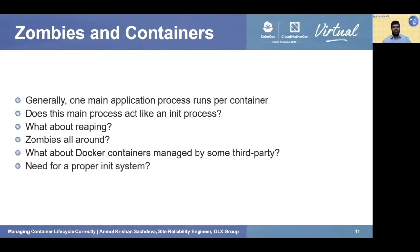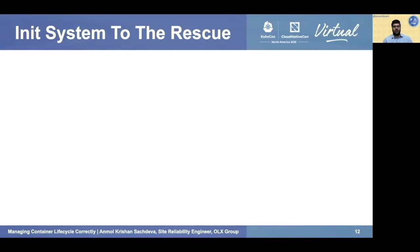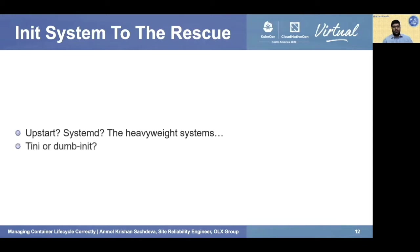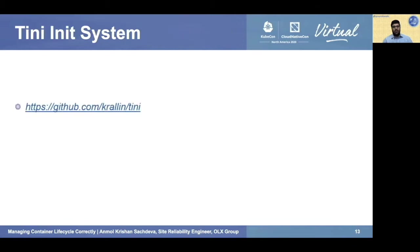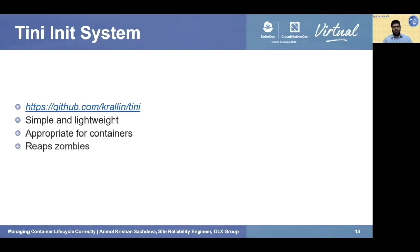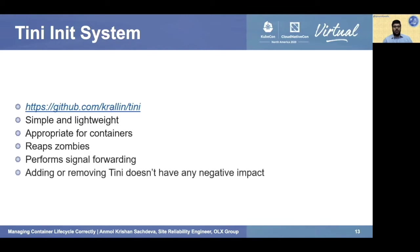There comes a need for a proper init system in our containers. Sometimes people use bash, but bash can perform some reaping functions yet is not able to handle signals properly — it can't pass signals received from the OS to child processes. More sophisticated options are upstart and systemd, but these are heavyweight systems. Tini and dumb-init are lightweight alternatives. We'll be using tini in this talk. Tini is an open-source init system suitable for Docker containers and production environments. It's simple and lightweight, reaps zombies, does proper signal forwarding, and adding or removing it has no negative impact.